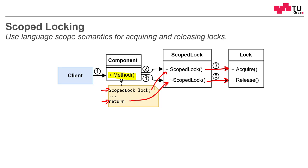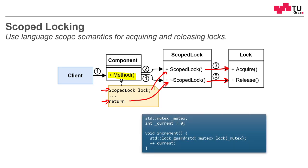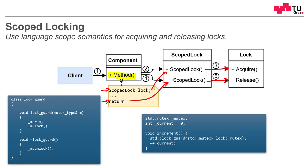In this source code example, you see an increment function which acquires a lock guard using a mutex, but does not unlock it again. This happens automatically when the stack for this function is unwound. This is a simplified implementation of the lock guard: in the constructor, as soon as the variable is created on the stack, the mutex is stored and locked. When we leave our current scope, the destructor is called and the mutex is unlocked again.